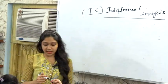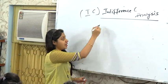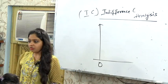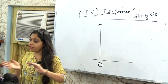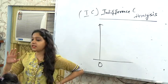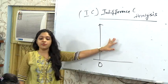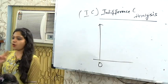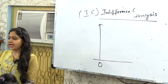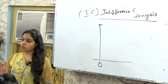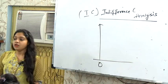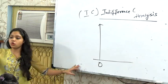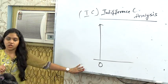We are studying the next part of demand — the last part — that is indifference curve analysis. So far we have studied the relationship between price and demand, but now we are going to study the relationship between two commodities: commodity X and commodity Y. You can call them apple, orange, mango, banana — anything you want.